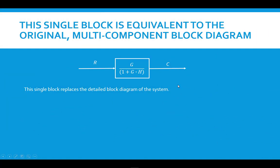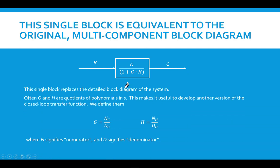So this is the equivalent because we were careful in the way that we did our block diagram algebra, and we can replace that entire system before, with the feedforward and feedback loops, with one single transfer function. These transfer functions G and H are usually quotients of polynomials in S. We'll work an example in a minute that shows that. And that makes it useful to develop another version of the closed-loop transfer function. So what we're going to do is we're going to redefine them. We're going to break G up into a numerator and a denominator, and break H up also into a numerator and a denominator.